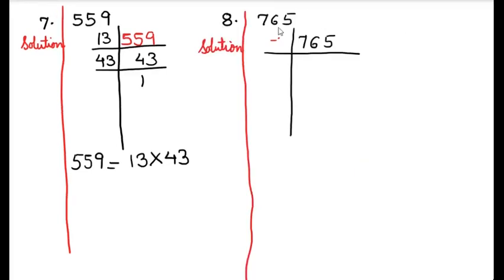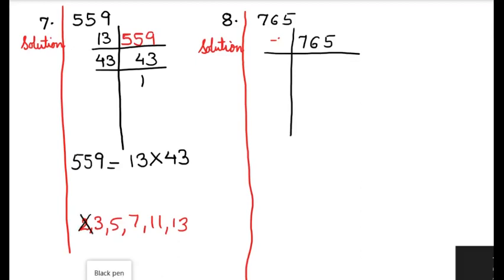Let's now solve sum number 8, that is 765. We will start from the smallest prime number, that is 2. Is this number divisible by 2? No, because at its units place we have 5, and 5 is not divisible by 2. So this number is not divisible by 2. Next is 3 — is it divisible by 3? We will check first: 7 plus 6 is 13, 13 plus 5 is 18. Is 18 divisible by 3? Yes, it is divisible.